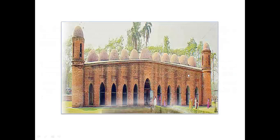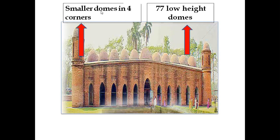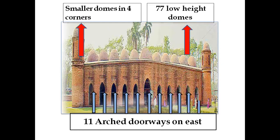Here is the picture of the Shatgombuj Mosque. This arrow is indicating the 77 low-height domes at the roof. We have already seen this in the wooden structure. Here is another arrow indicating the smaller domes at the four corners. There are 11 arch doorways on the east — let's count: one, two, three, four, five, six, seven, eight, nine, ten, eleven. There are eleven arch doorways on the east.